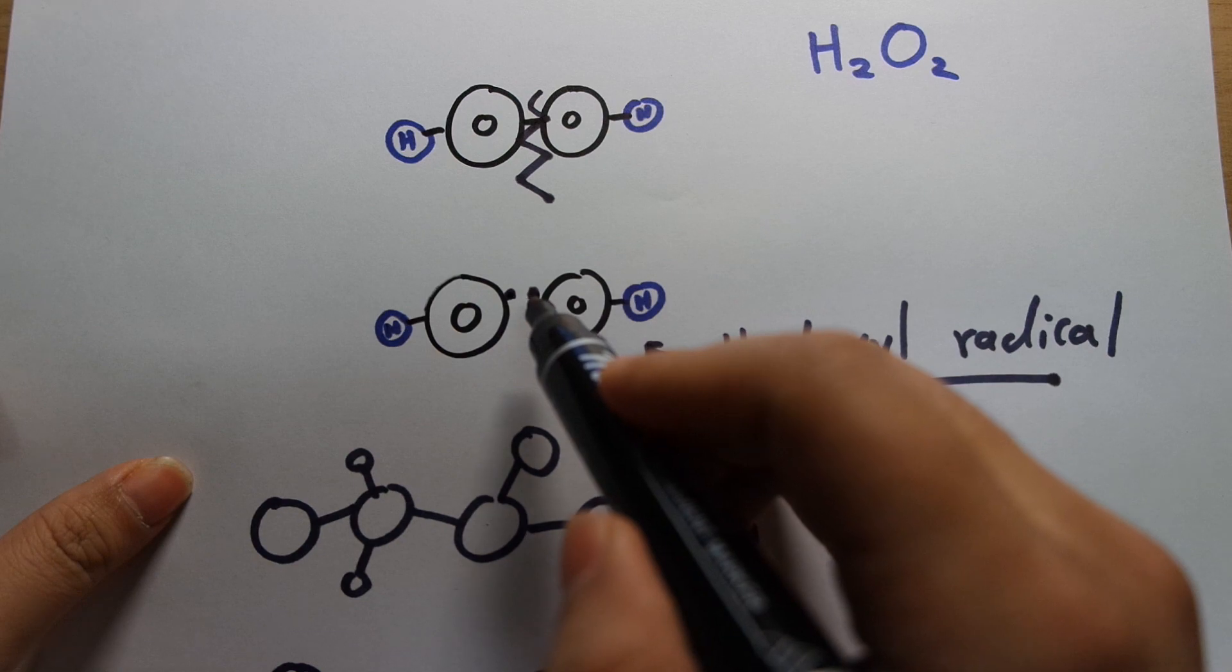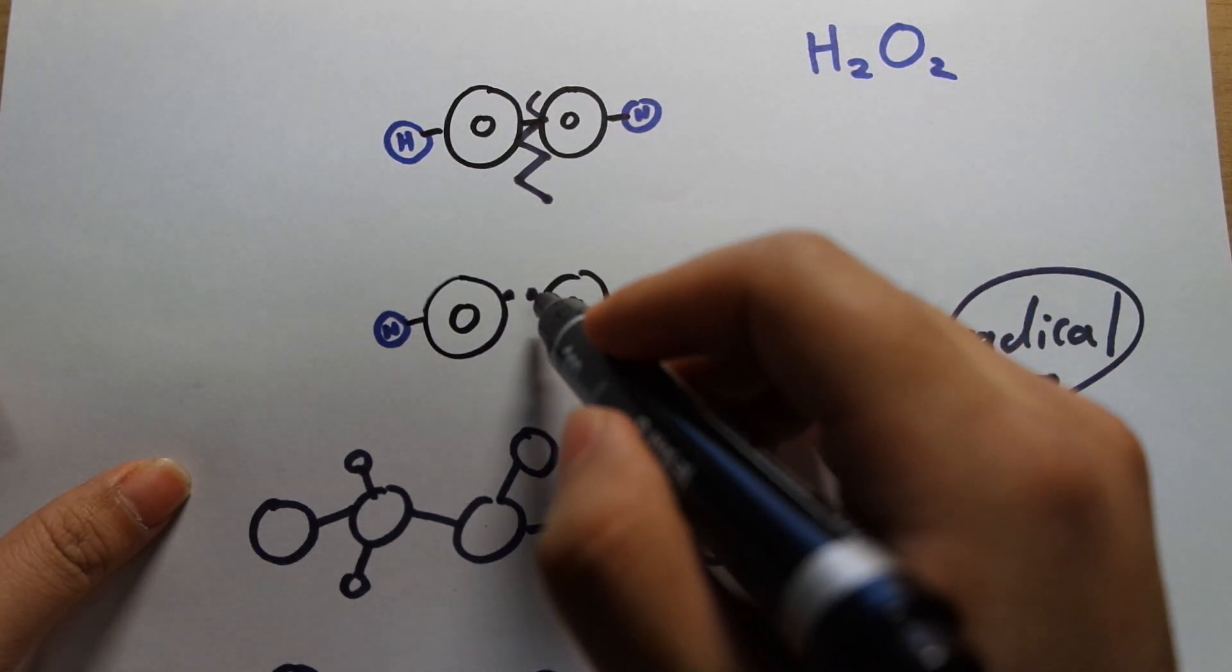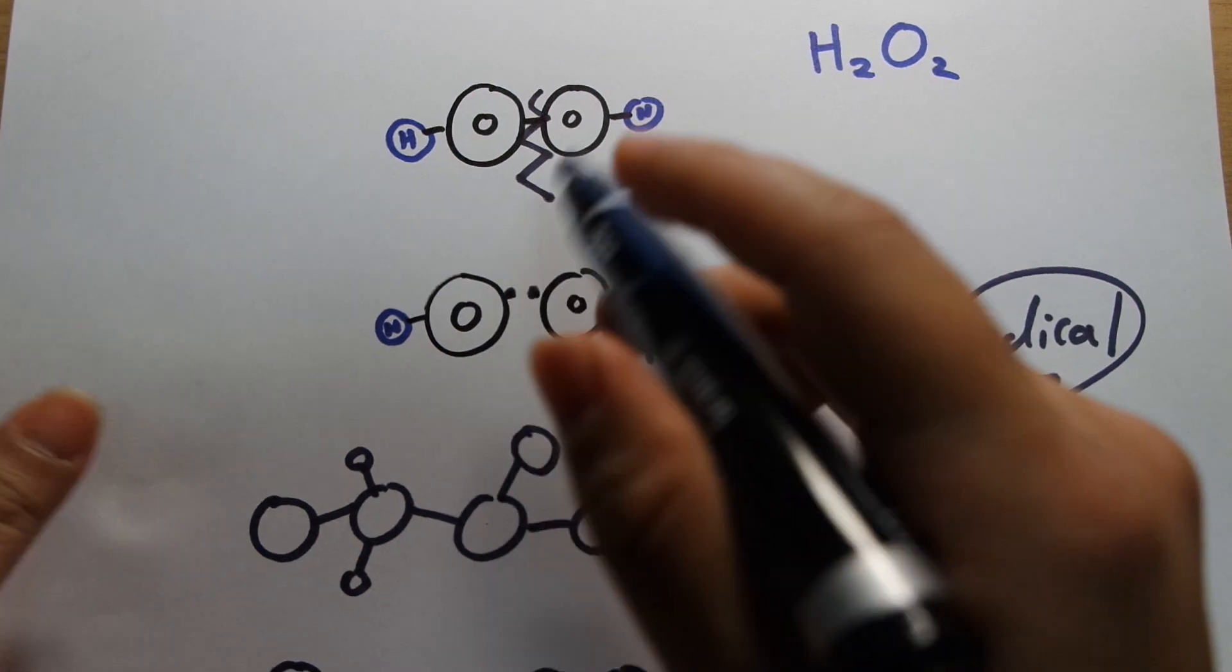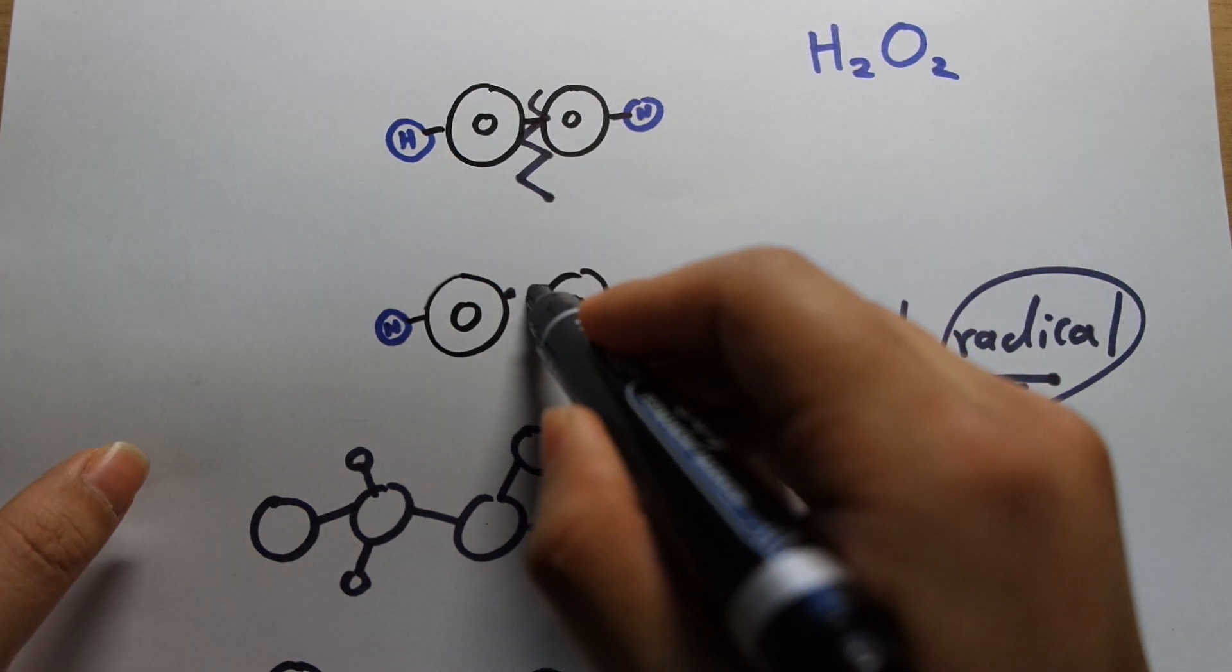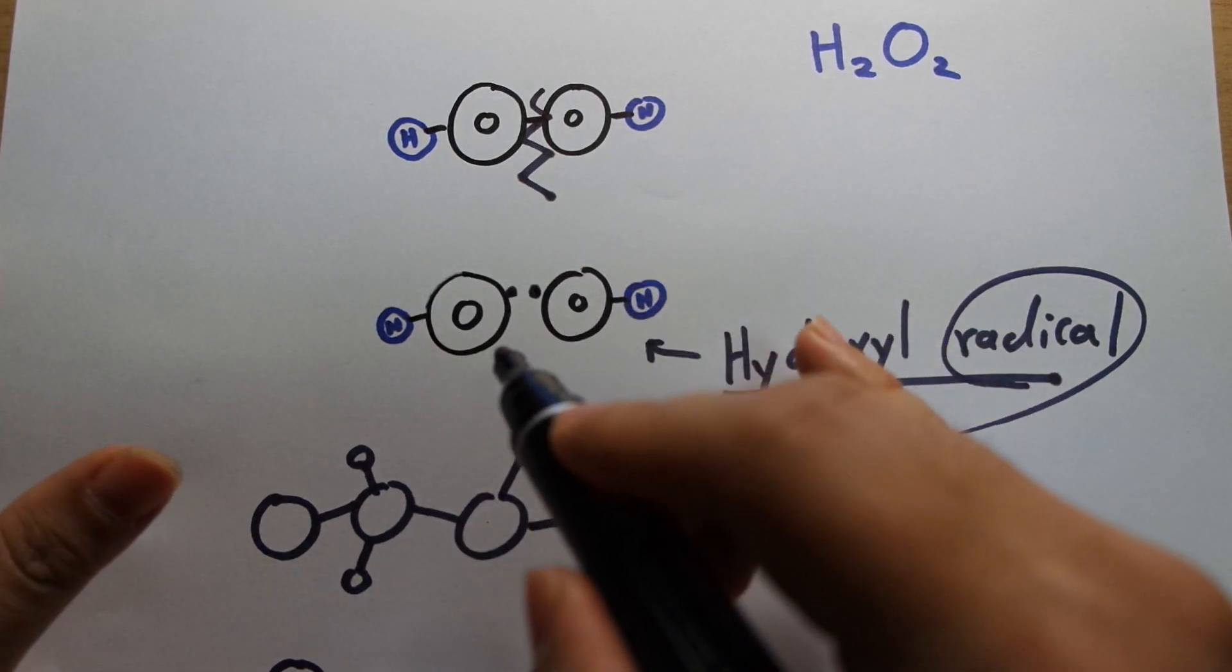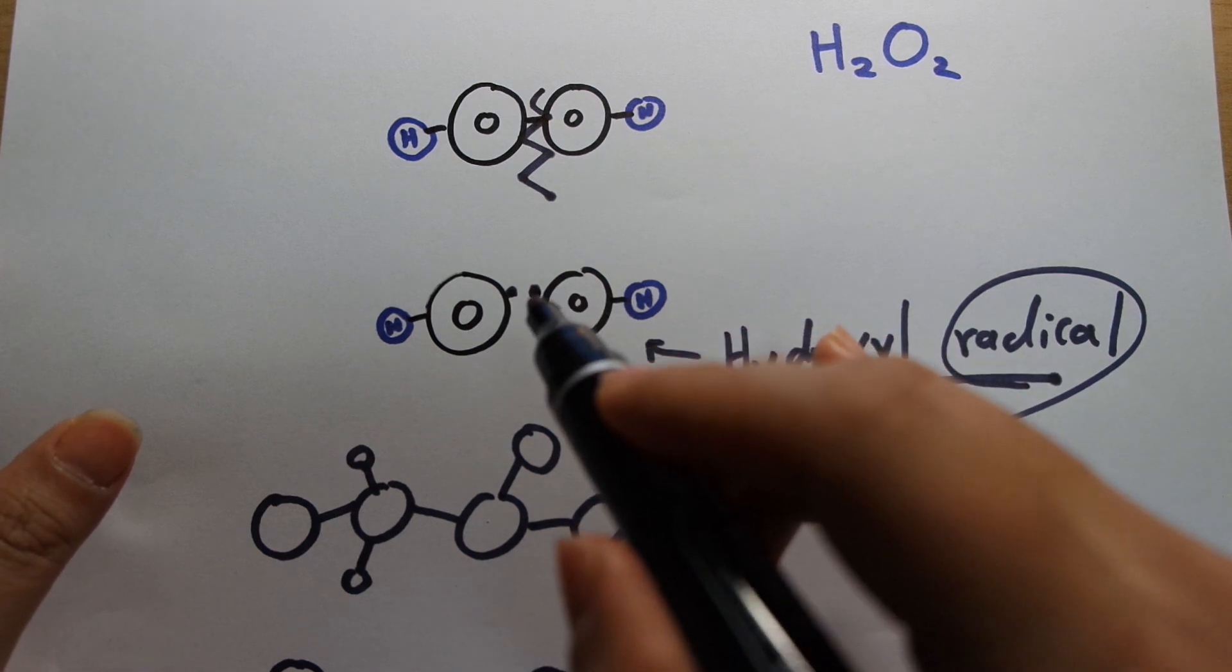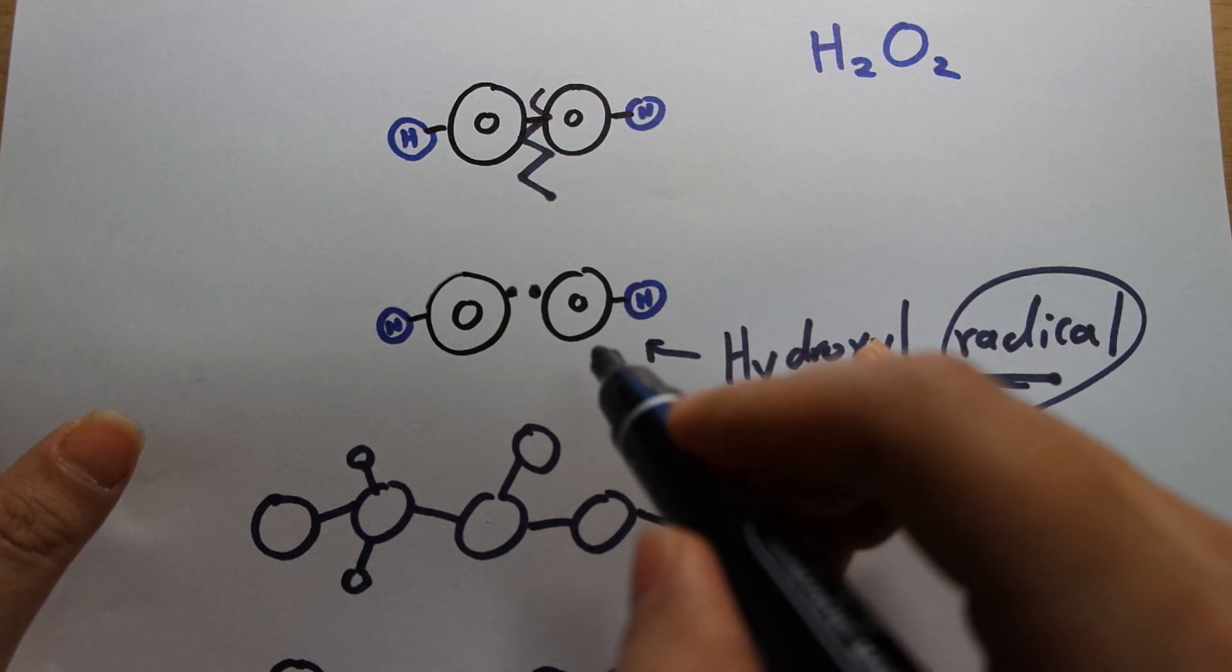And what this free electron does, because it is a radical, that means there's an unpaired electron here. Now electrons, when they're in pairs, when there's two together, they are stable and they're happy. But when they're unpaired like this, they are very unstable, very unhappy, and what they want to do is they want to get another electron from somewhere. And that somewhere can be anywhere.